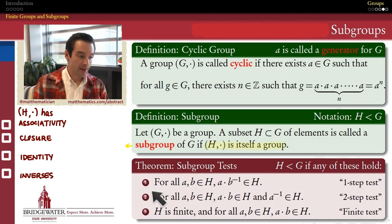So we'll check those one at a time in the case of my subgroup test number one, the one-step subgroup test. So assume that my subset H meets this criterion. Assume that for all a and b in my subset H, the product a times b inverse belongs to H. So assume that's true. We're going to show that then H meets all four of these criteria to be a subgroup of G.